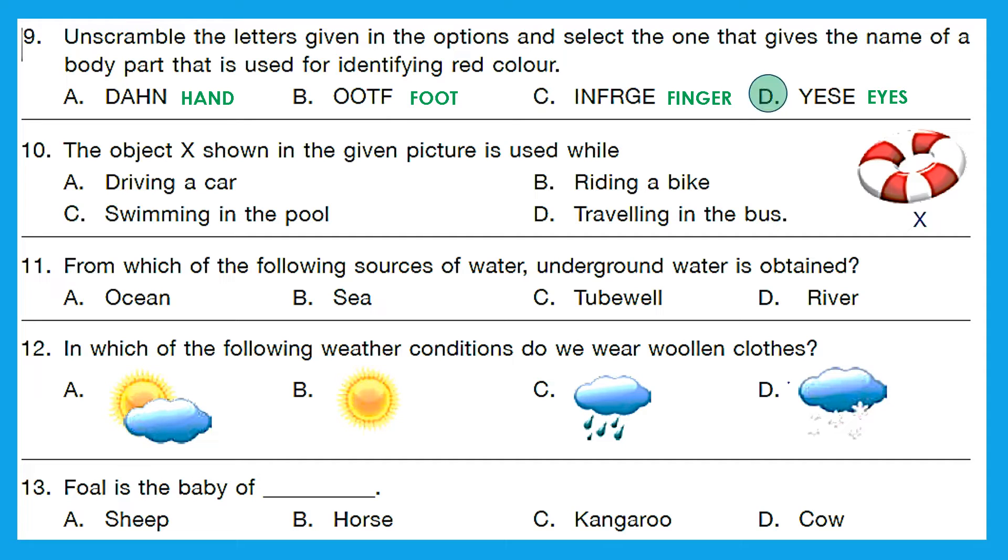Question 10. The object X shown in the given picture is used while? So what is object X? It is a swim tube and we use it while swimming in the pool. So option C is the right answer. Question 11. From which of the following sources of water is underground water obtained? Now here it's a very easy one because tube wells are used to draw out underground water. Option C is the right answer.